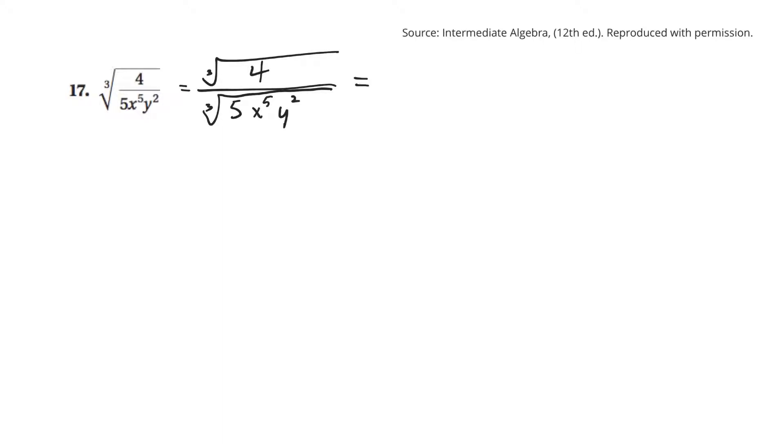Okay, so, cube root, again, this time I need three things that are the same inside. So, I'm going to take this 5x5y2, sort of just what I have already. And I'm going to times it. I'll multiply it by cube root of something. And hopefully this is going to cancel stuff out on the bottom.